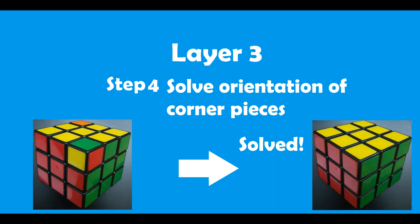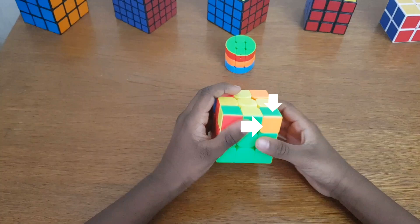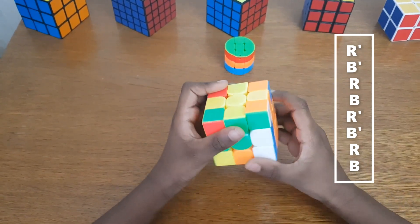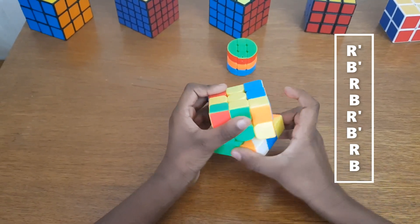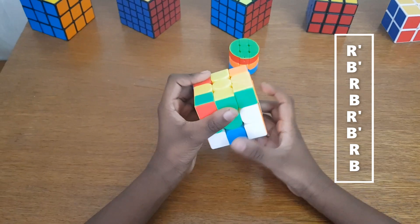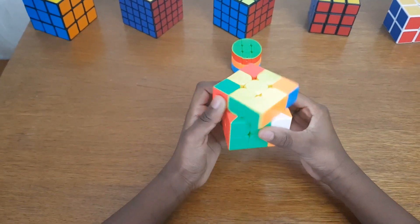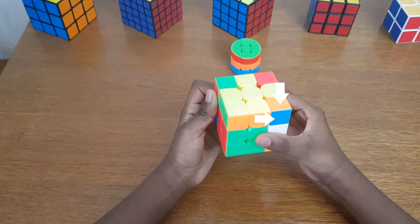We are in the final step of solving the Rubik's cube. In this step, we will solve the orientation of the corner pieces. There can be one or all pieces that are wrong. Keep the incorrect corner piece in the top right and follow these rotations: right counter-clockwise, bottom counter-clockwise, right clockwise, bottom clockwise, right clockwise, bottom clockwise. Rotate the top side and bring the incorrect piece to top right, then repeat the same rotations.